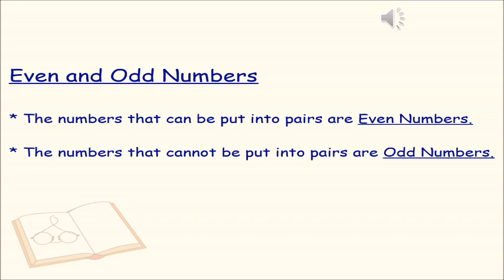Even and Odd Numbers. The numbers that can be put into pairs are even numbers. The numbers that cannot be put into pairs are called odd numbers. So, if I take an example of 8, I can pair it as 2 in 1 set. I will have no extra numbers. So, that is an even number. If I take 3, I will have a pair of 2 and 1 will be left out. That is an odd number. Let us see more examples to understand it better.